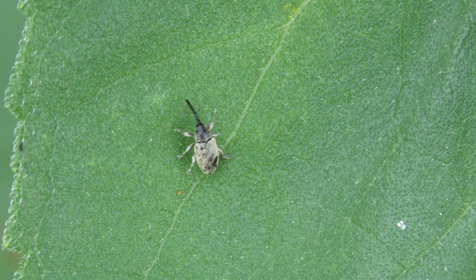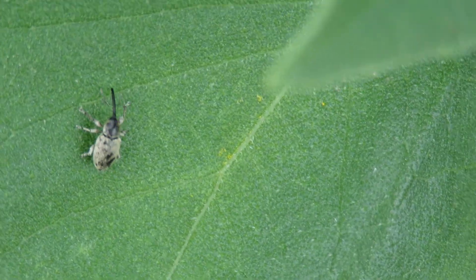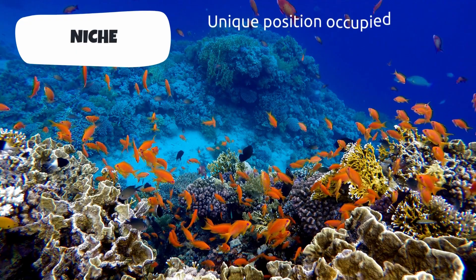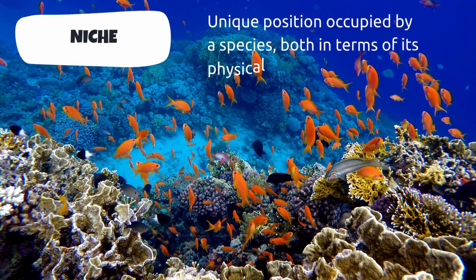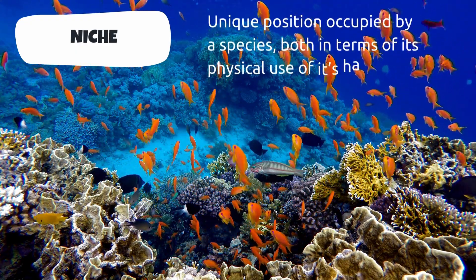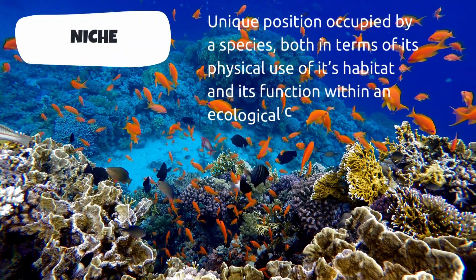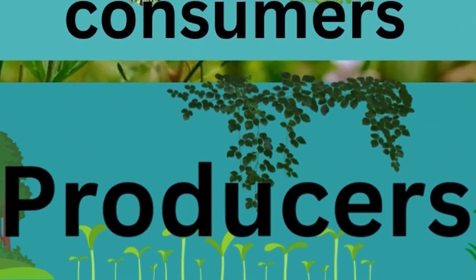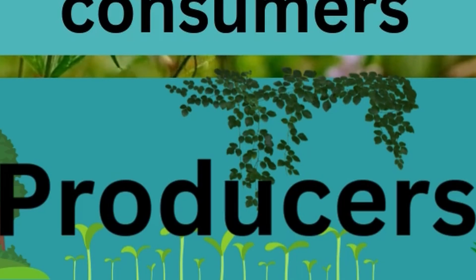Each organism within an ecosystem has what is known as a niche, or the particular role the organism plays. And all of the interconnected organisms in the ecosystem are within one of four trophic levels. Starting at the base of this pyramid is the most fundamental of the trophic levels: the Producers.